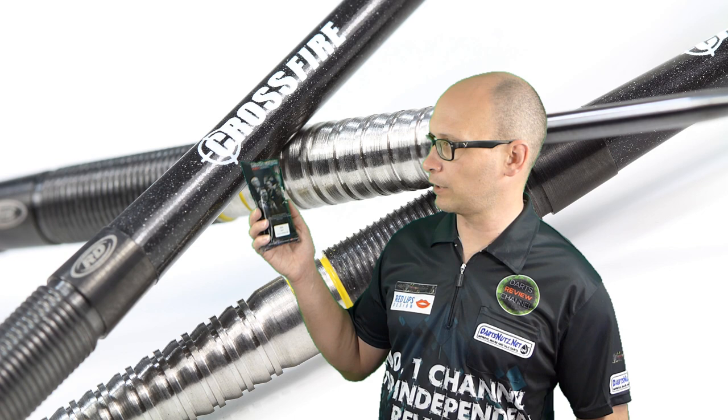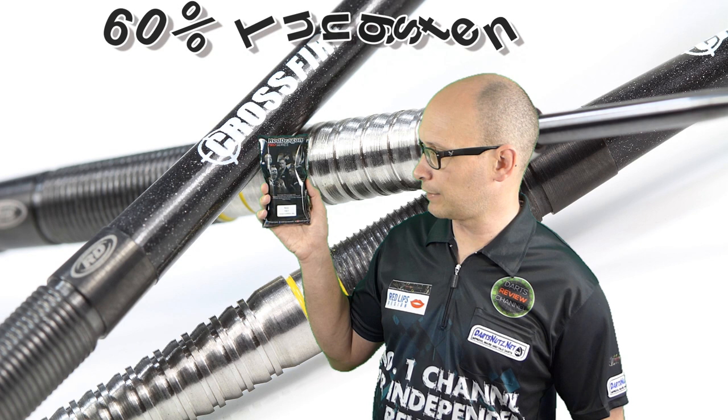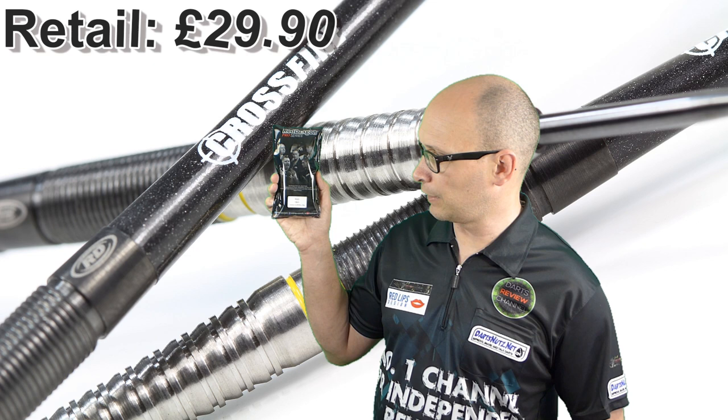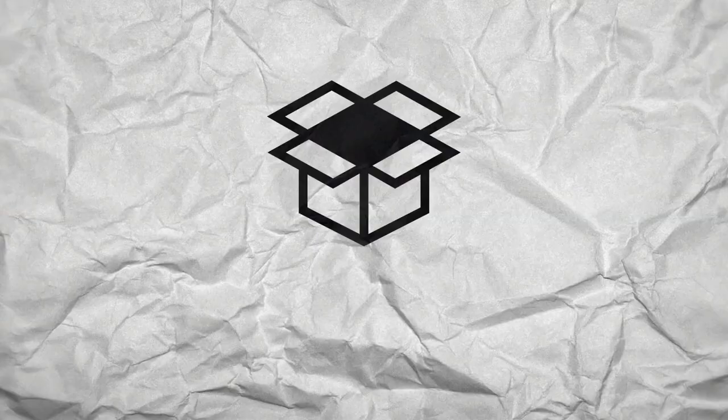For this review I'm reviewing the Red Dragon James Hurrell Darts. These are only in 24 gram and they're 90% tungsten. They retail for £29.90. It's a very nice looking dart and I was quite keen to try them. They have a black PVD coating on. So let's check them out.